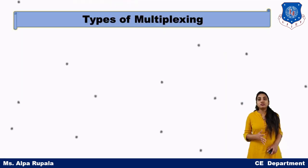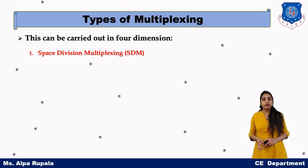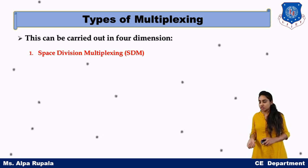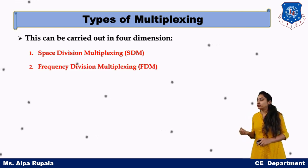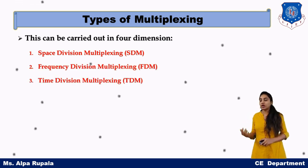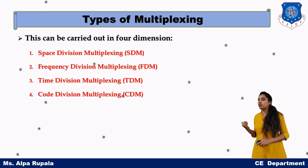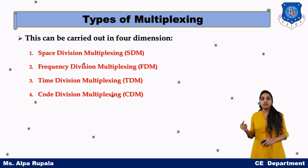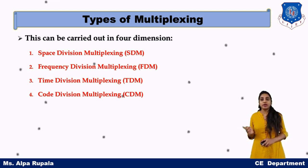According to the four dimensions, we can have four types of multiplexing: Space Division Multiplexing, Frequency Division Multiplexing, Time Division Multiplexing, and Code Division Multiplexing. The corresponding parameters or dimensions are space, frequency, time, and code.